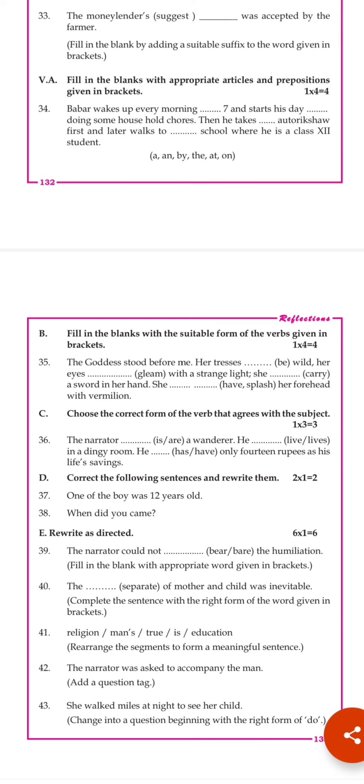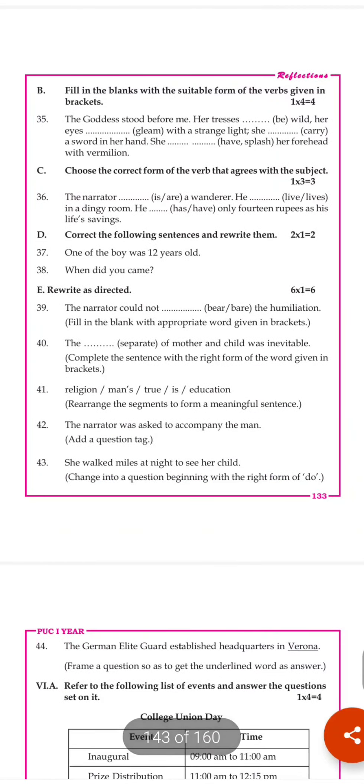It cannot be 'an school.' Either it is just 'school' or 'the school.' According to the context, it is 'the school where he is a class 12 student.' So when a preposition already appears before a blank, the blank will always require an article, not another preposition.